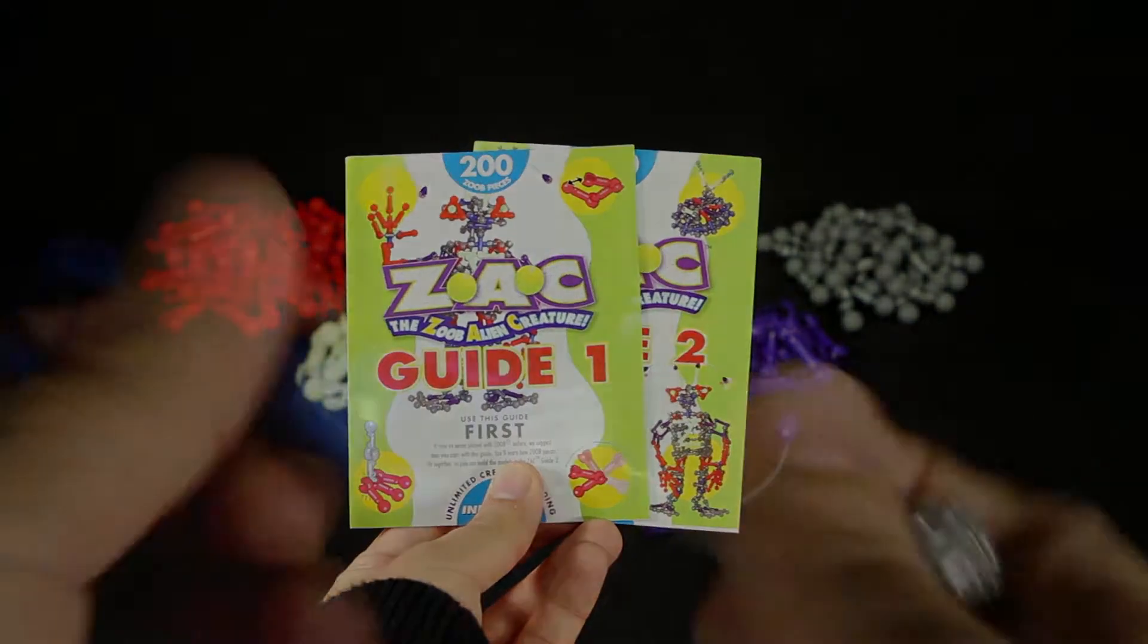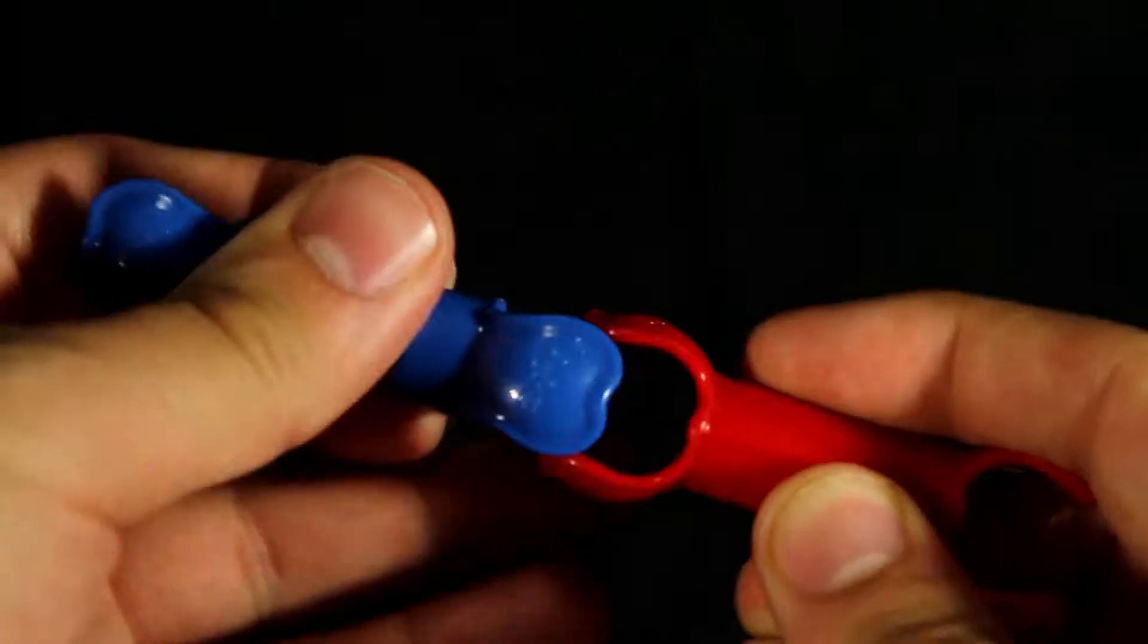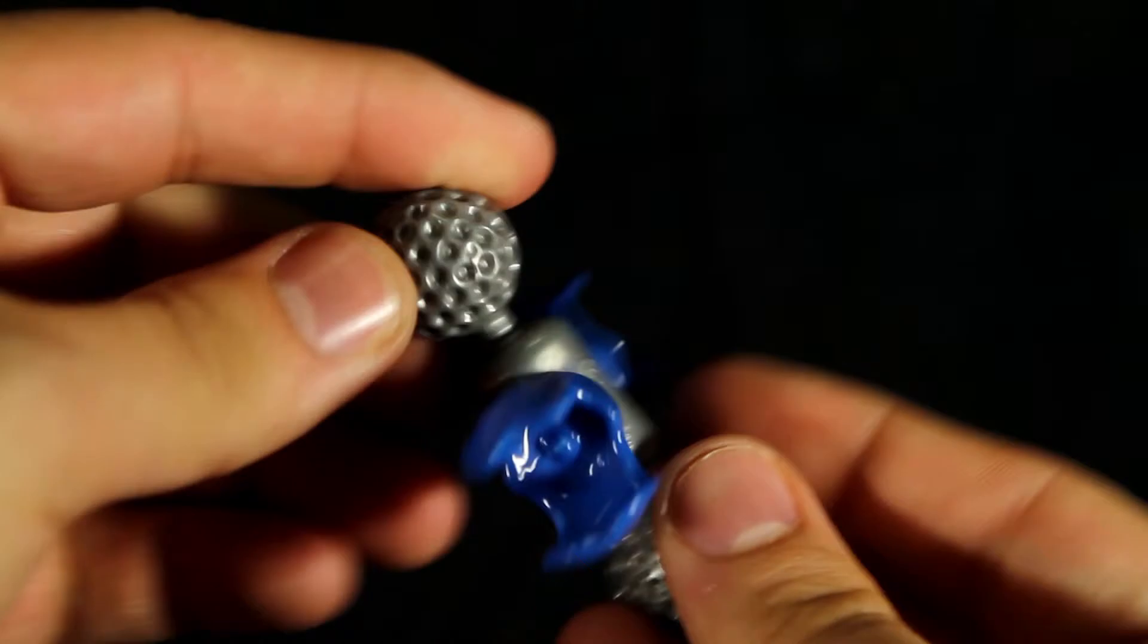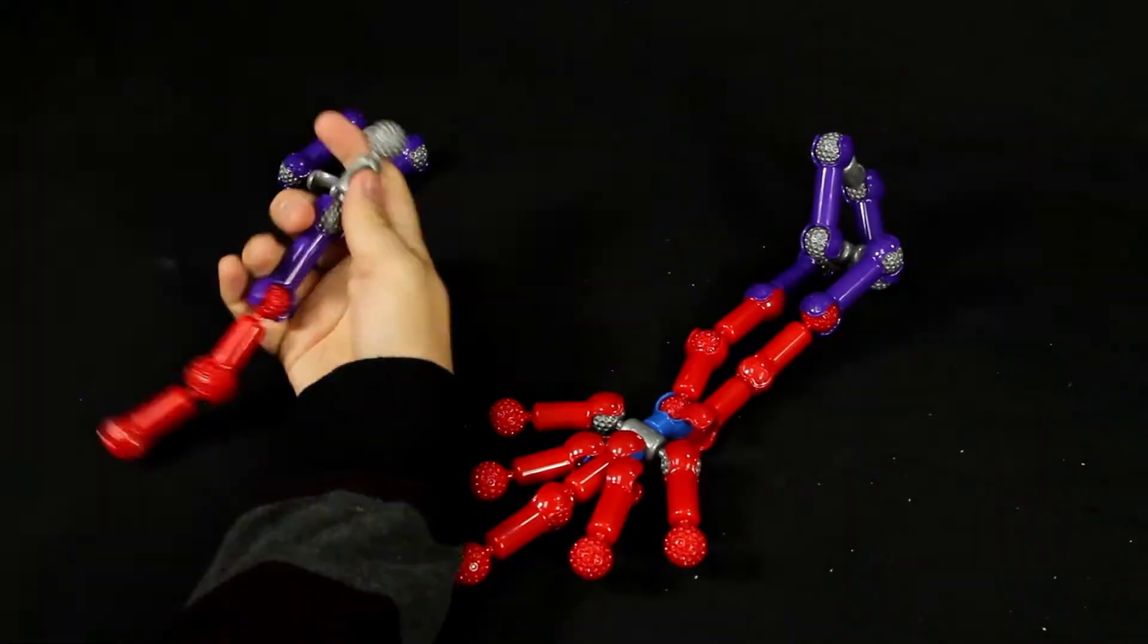Zoob features five unique pieces that snap, click, and pop together in multiple different ways, making building easy and versatile.